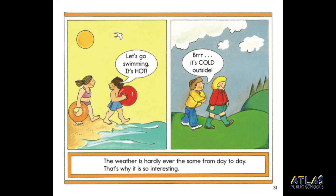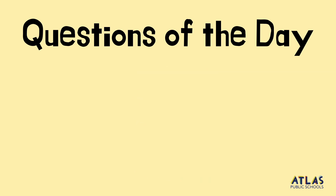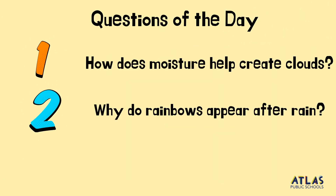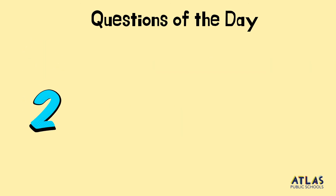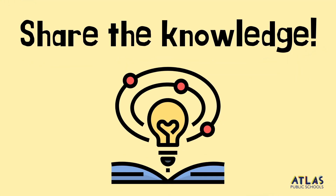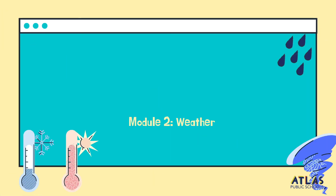Let's go swimming. It's hot. Brr, it's cold outside. All right, Atlas readers. It's time for our three questions of the day. First, how does moisture help create clouds? Two, why do rainbows appear after rain? Three, how can cloud patterns help us predict the weather? I hope you were able to learn something new about the weather today. Let someone know something new that you learned from this book. Bye, see you next time!